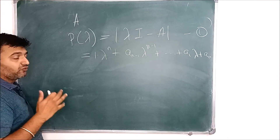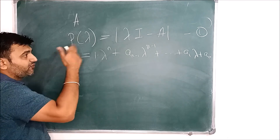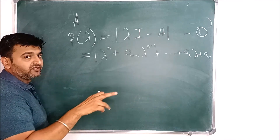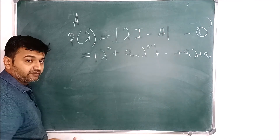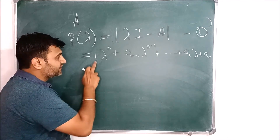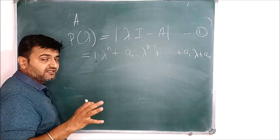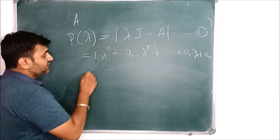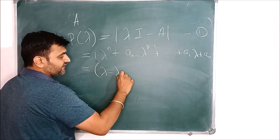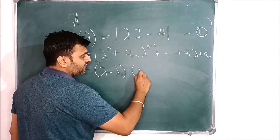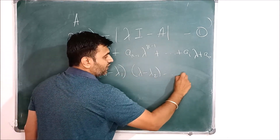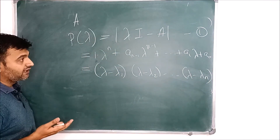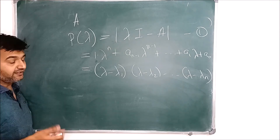If the leading coefficient is not 1, when finding eigenvalues we set P equal to 0 and divide by the highest coefficient so it becomes 1. So without loss of generality, I can assume this to be 1 because it does not affect the eigenvalues. Since this is a polynomial of degree n, I can factorize it as (lambda minus lambda_1)(lambda minus lambda_2)...(lambda minus lambda_n), where lambda_1 to lambda_n are the roots of this polynomial and hence they are the eigenvalues.